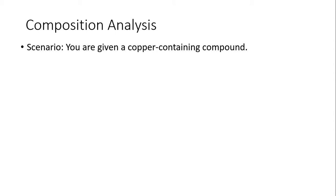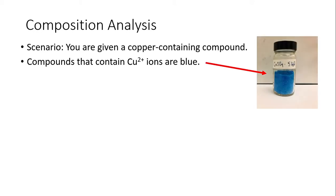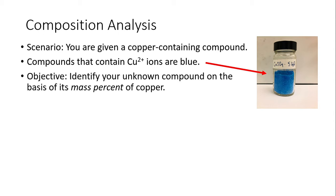Compounds that contain the copper two ions are typically blue, such as this example you're seeing here on this picture. Our objective is to identify the unknown compound on the basis of its mass percent of copper.